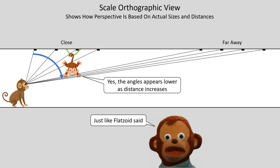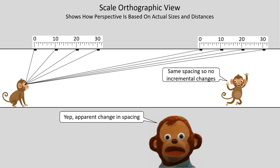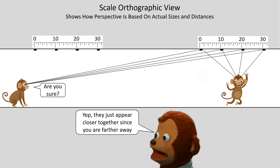And this orthographic view shows exactly why we see this. The physical distance I move is exactly the same. Nothing has gone incrementally wrong. The only thing that you observe is three-dimensional space. Here's a measurement showing that the spacing is the same, and again, this orthographic view shows exactly how perspective works.